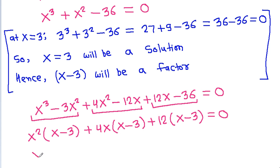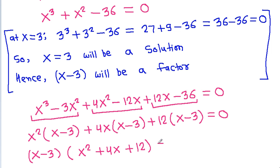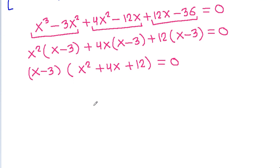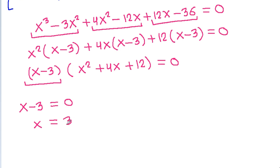And we can take out (x minus 3) as a common factor, so either x minus 3 will be equal to 0, giving x equal to 3, or the remaining quadratic factor x squared plus 4x plus 12 will be equal to 0.